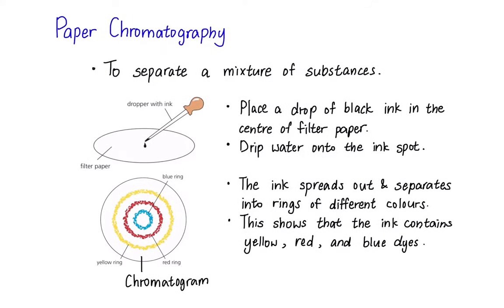We have come to the last part of the lesson, paper chromatography. Paper chromatography can be in many forms and the one shown here is to separate a mixture of substances, for example, a dye. For you to do that, place a drop of black ink in the center of filter paper and drip water on it. You will start seeing that the ink has spread out and separated into rings of different colors such as blue, red and yellow. This chromatogram will then reveal what kind of dyes were present in the ink.